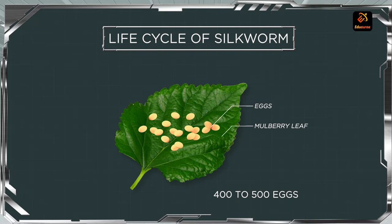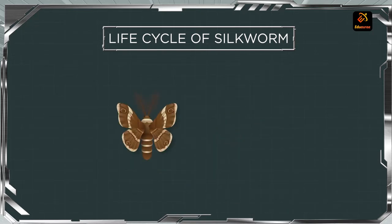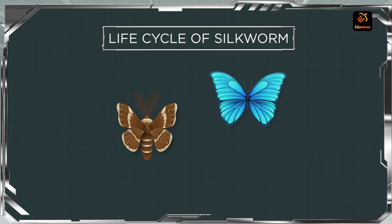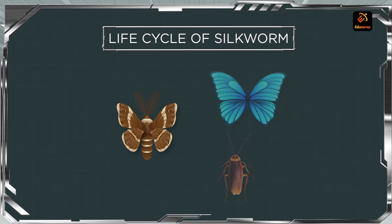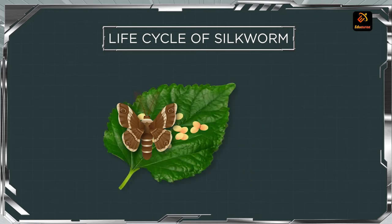Very importantly, this female insect is not able to fly. We have seen there are so many insects that can fly — whether it is the butterfly or the cockroaches. Even the male silkworm can fly. But the female insect that is laying the eggs cannot fly at all. It will just lay the eggs and take care of them.